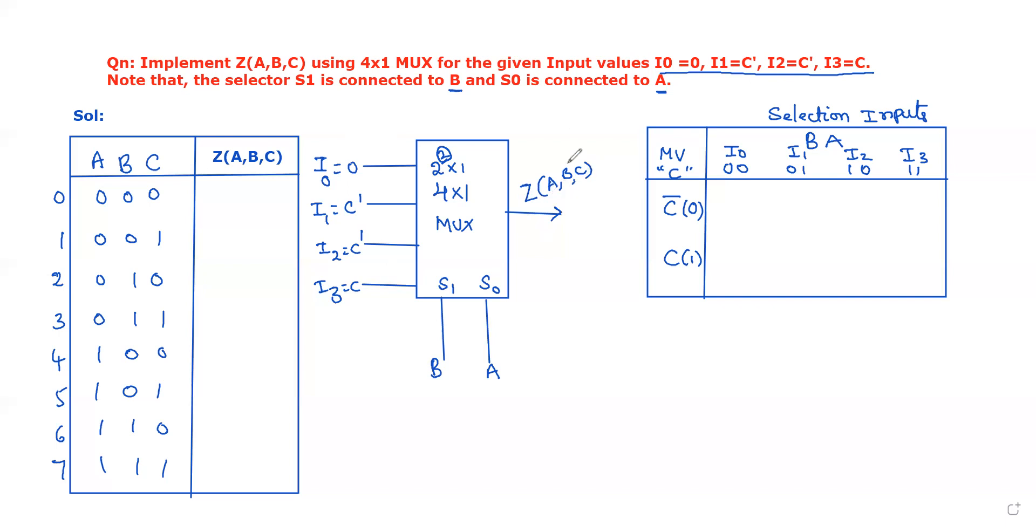We want to find Z of A, B, C here. For this, we have to prepare the table which has two columns. The first column indicates the missing variable C. The second column indicates the selection inputs. Missing variable here is only single, so we assign the two binary values 0 and 1, in the form of C dash and C. The selection inputs are B and A according to the block diagram and the given data.